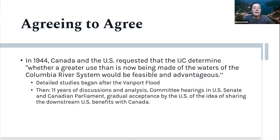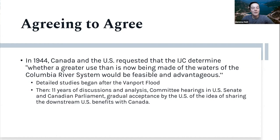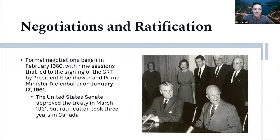In 1944, Canada and the U.S. had requested that the IJC determine whether greater use of the waters of the Columbia River system would be feasible and advantageous. Four years later, after the Vanport flood, detailed studies began. What followed was 11 years of discussions and analysis, two requests by the U.S. for approval of the Libby Dam in Montana, two proposals by Columbia River companies to build Canadian dams, committee hearings in the U.S. Senate and Canadian Parliament, and a gradual acceptance by the U.S. of sharing downstream hydroelectric benefits.